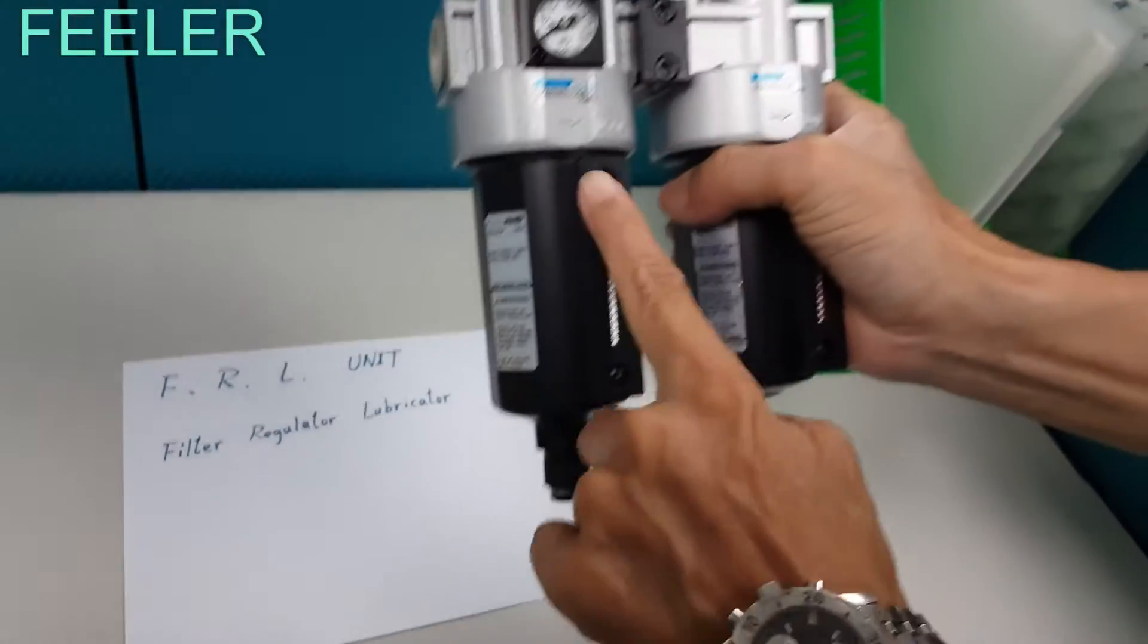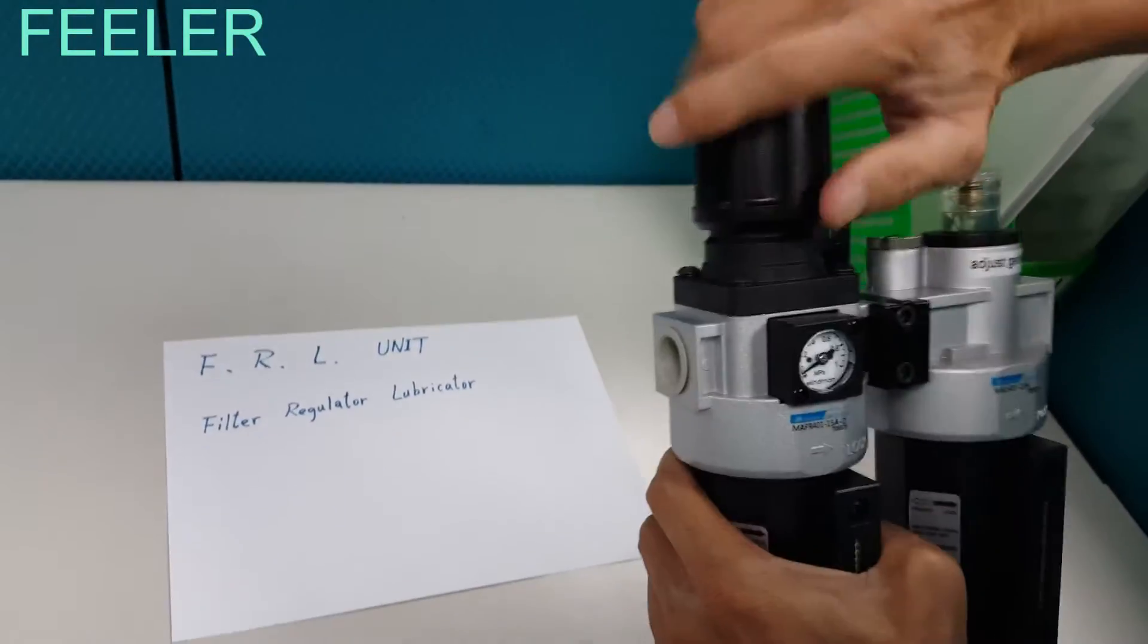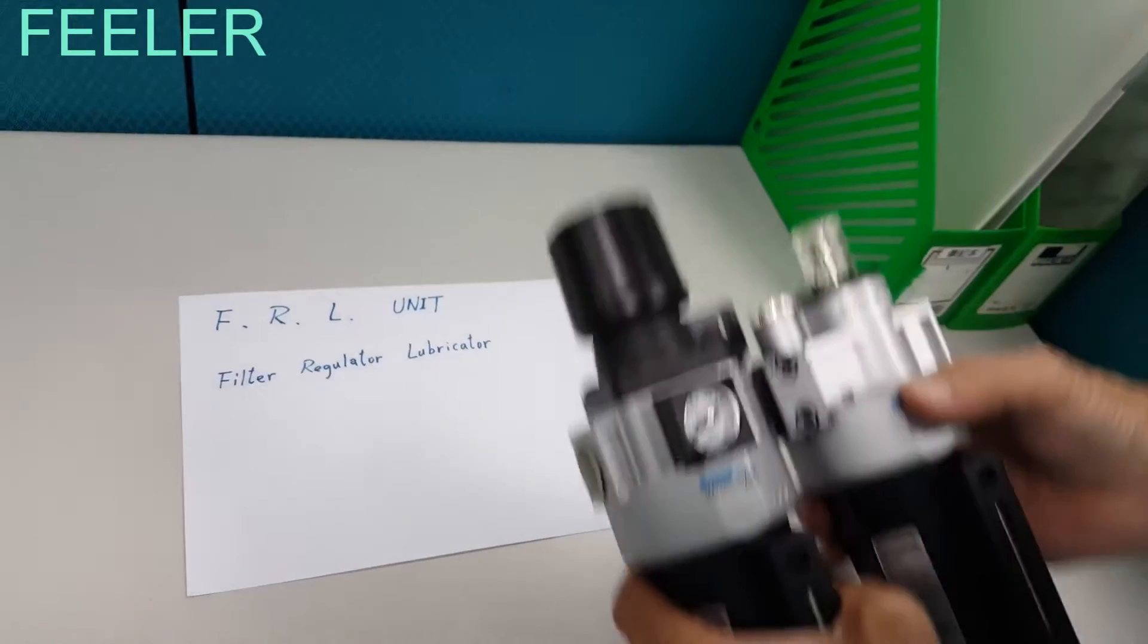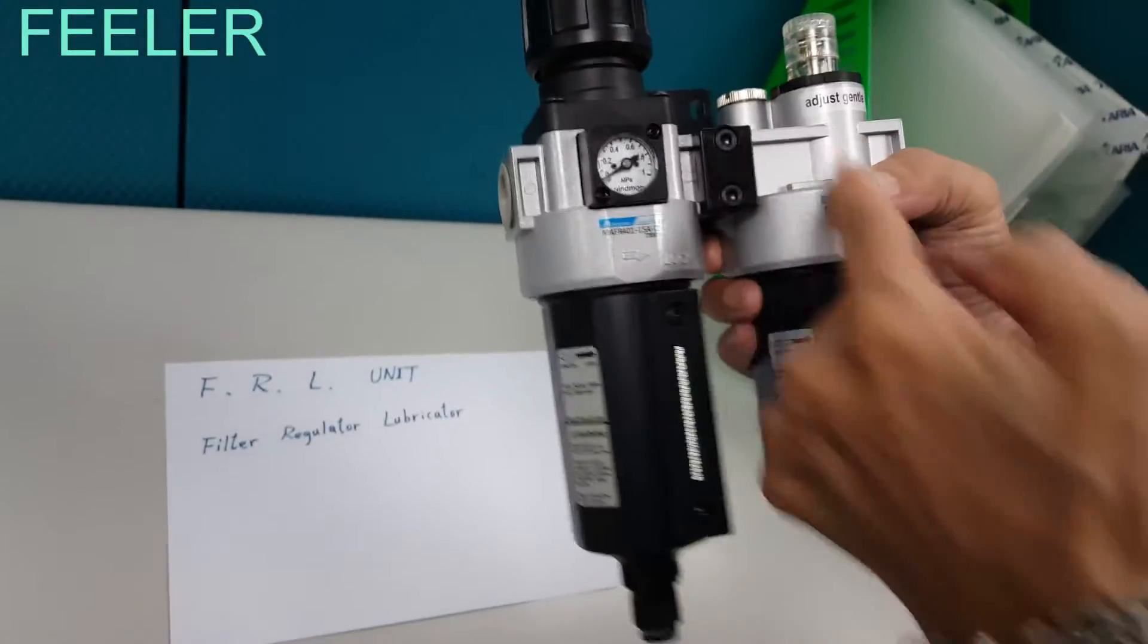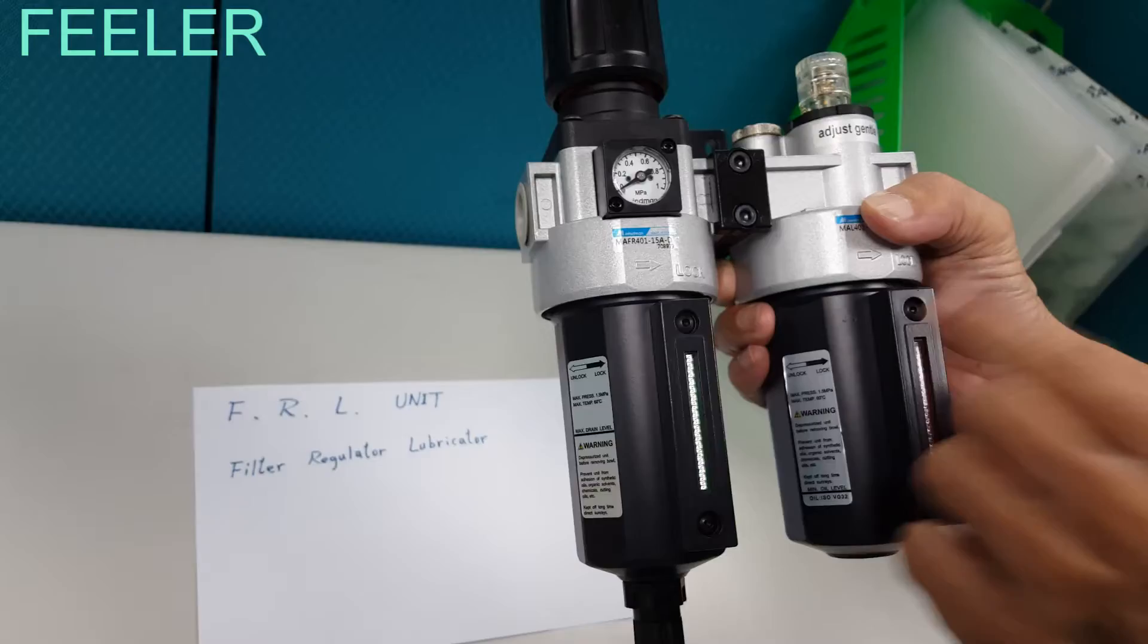Filter is here. This one is the filter, regulator here you adjust. Then this is a lubricator. It has lubricant inside. So lubricator is here, this unit.